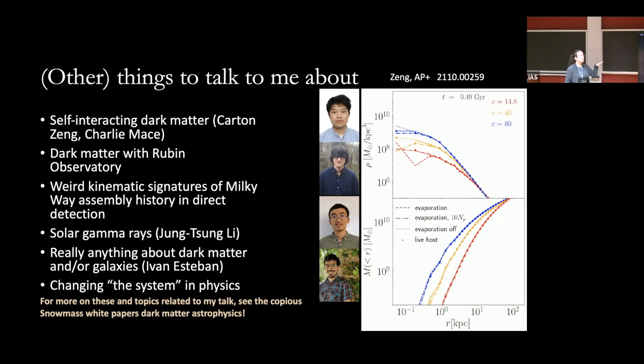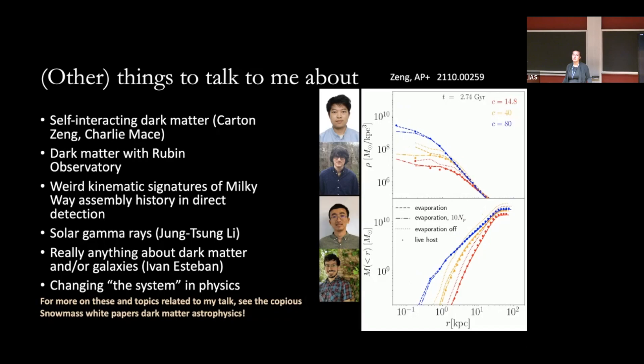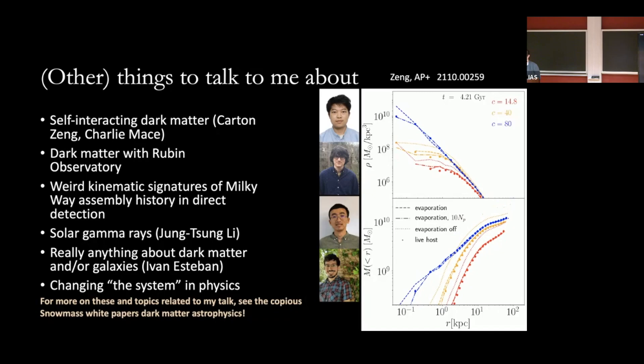This movie, put together by Carton, shows density profiles of dark matter halos. The different colors represent different central densities, and what we're seeing is the onset of the gravothermal catastrophe in dark matter if you have dark matter self-interactions. If you're interested in learning more about that, I'm happy to chat later.